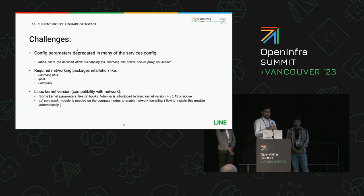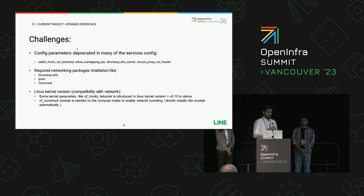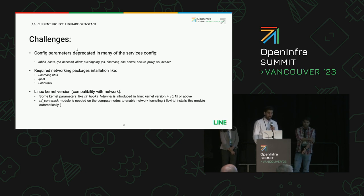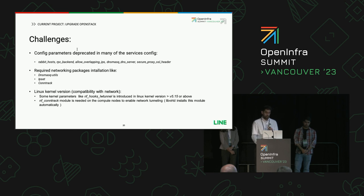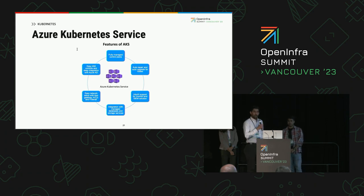The challenges we faced during this upgrade project were numerous. Some prominent ones: many configurations have been deprecated from the older version to the newer Z version. Also, a lot of newer packages are required on the compute nodes, which have to be installed either manually or by a deployment tool. The Linux version also had to be upgraded to more recent versions to enable many of the network features that the newer Z version offers. I would now request my friend Vishwajit Kumar to take on.